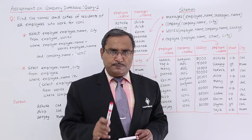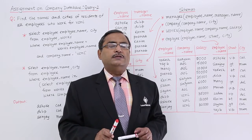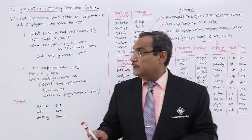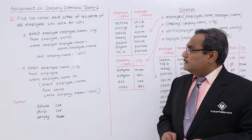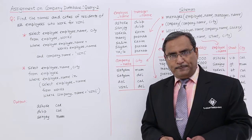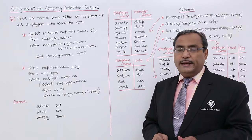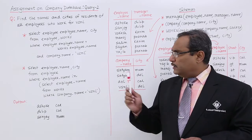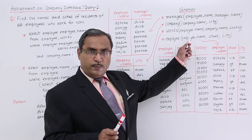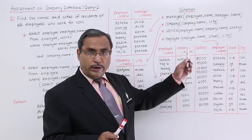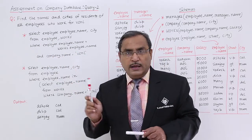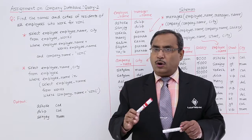Always remember, finding out the respective tuples required for the query execution is important. Here we have written this query: SELECT employee.employee_name, city FROM employee, works WHERE employee.employee_name = works.employee_name AND company_name = 'VSNL'. In between works and employee we are having the employee name column common, that is why we have written employee.employee_name = works.employee_name, so that we can have only the feasible combinations. Whenever we write employee and works after FROM, they get joined through the Cartesian product operation.